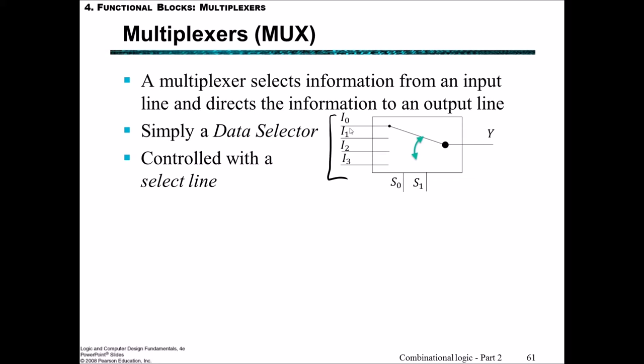If we had only two inputs, we could do a single select line. And if we had eight inputs, then we would need three select lines. Can you see the pattern emerging here? We'll also call this a four to one MUX. Four inputs, one output. Sometimes also represented as four times one MUX.